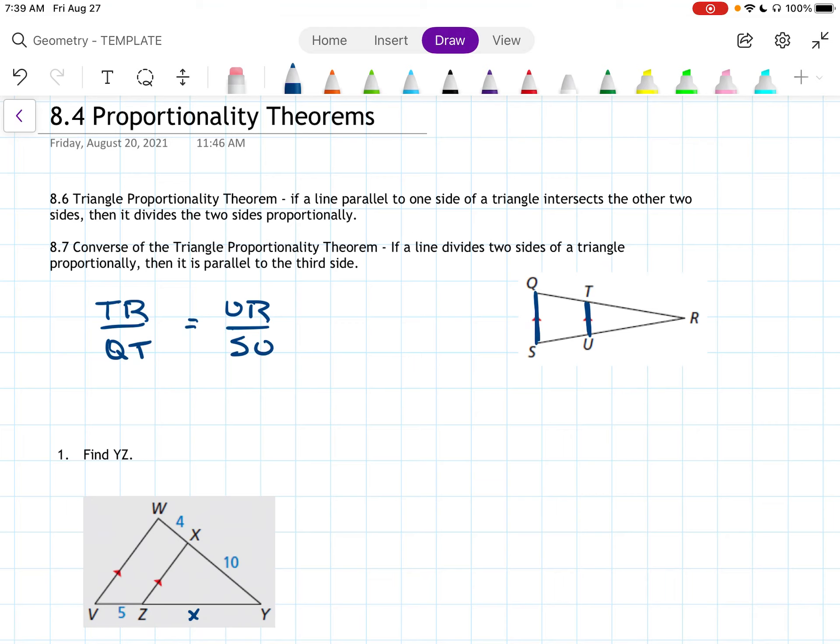Right? We took the big piece over the little piece. And then in the other one, we took the big piece over the little piece. Okay? Now you can flip these. You can put the little pieces on top, but you have to put both little pieces on top.